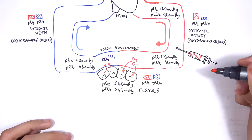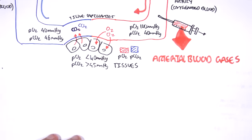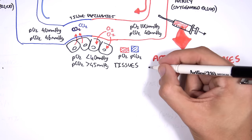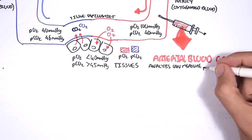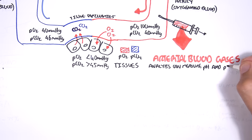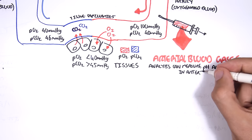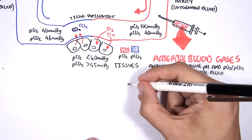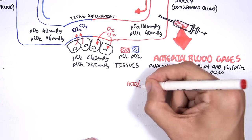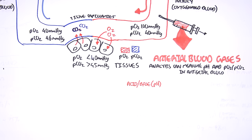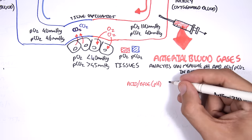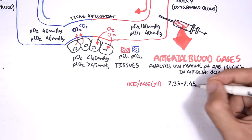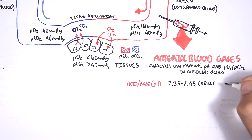We can take blood from the artery and measure the arterial blood gas. Arterial blood gas analysis is used to measure the pH and the partial pressure of oxygen and carbon dioxide in arterial blood. It can tell us if our body is suffering from acidosis or alkalosis and whether it is a problem of respiration or kidneys. Arterial blood gas can tell us if our blood is acidic or basic — normally the pH is between 7.35 and 7.45 in arterial blood.